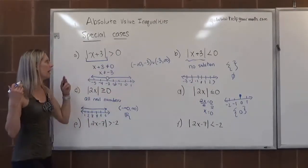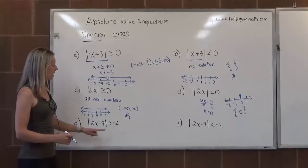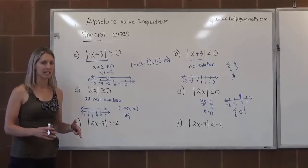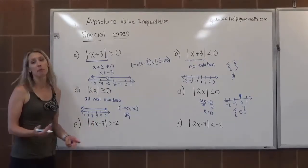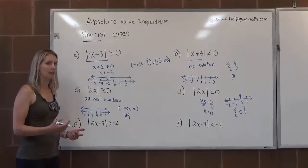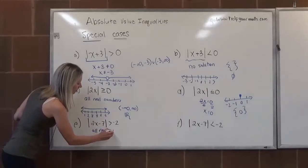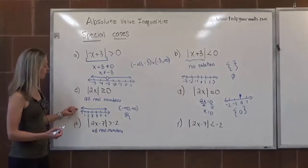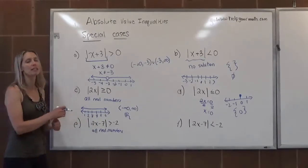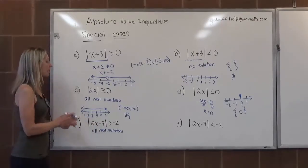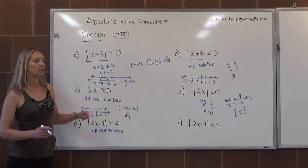We've looked at all the different possibilities when the absolute value deals with 0. Now we're going to look at when it deals with negative numbers. We have the absolute value isolated on the left-hand side. Where are we going to find numbers bigger than negative 2 when we take the absolute value? Absolute value is at the very smallest 0, which is bigger than negative 2. So every number is going to have an absolute value greater than negative 2 — this would be all real numbers. The graph covers everything, and the interval notation is from negative infinity to infinity.